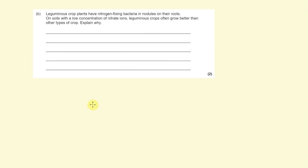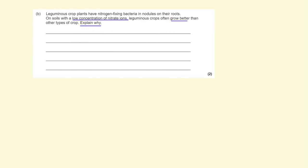So here we go, leguminous plants, we know what those are now. How do they grow better in soils with a low nitrate content? And that's because they're able to fix nitrogen into ammonium ions, and then the plant can use those ammonium ions to produce protein or DNA or RNA.